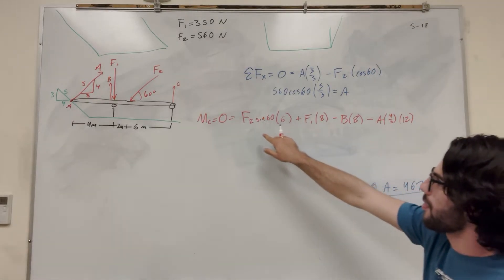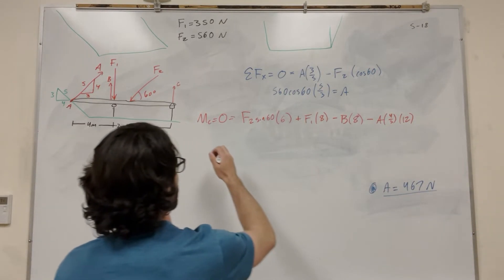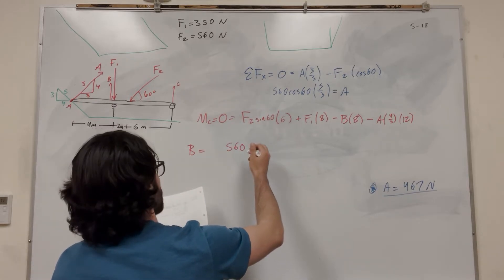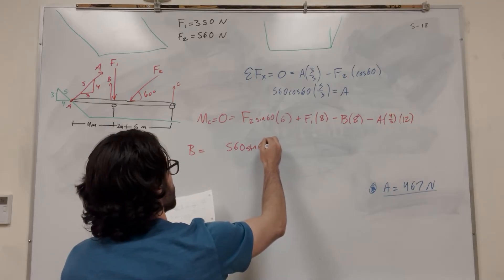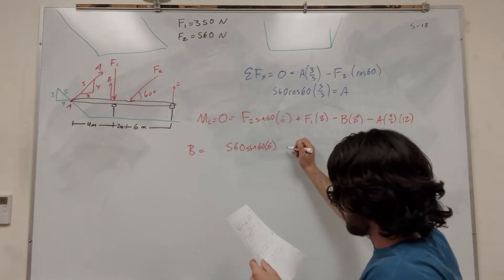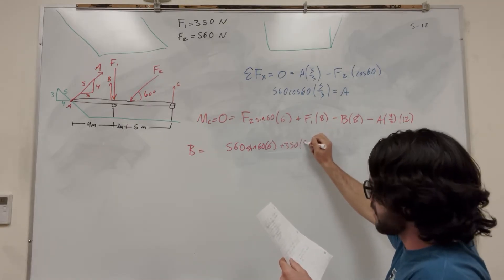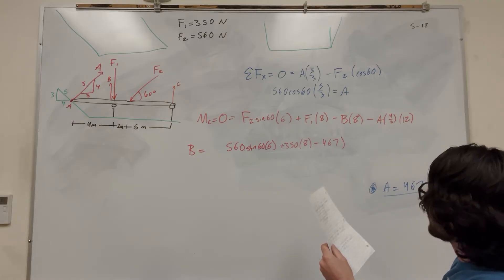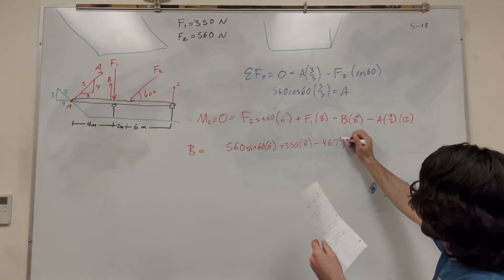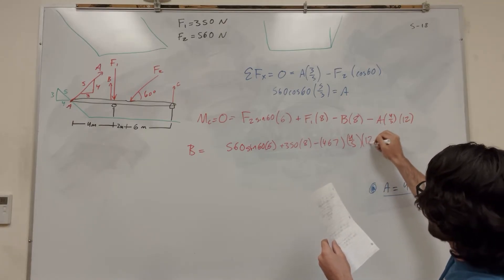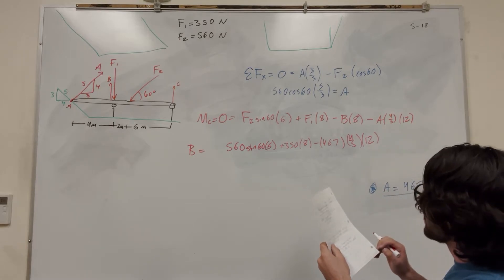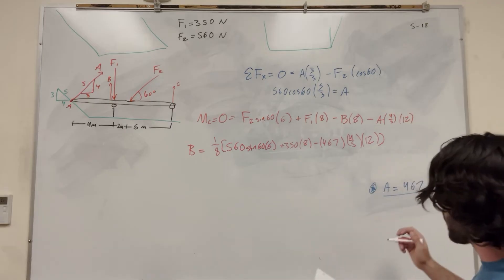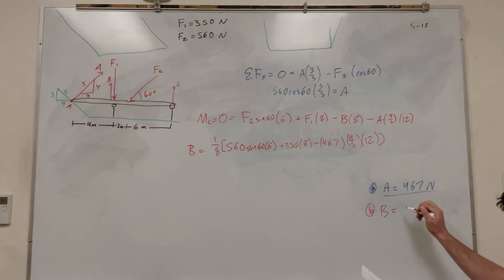So we end up with this equation. We know what A is, we know what force 1 is, we know what force 2 is. So we move everything over: B times 8 equals force 2 sine of 60 times 6, plus 350 times 8, minus A times 4 over 5 times 12. Then divide by 8 to get B. Doing that math, you get B is equal to 152 newtons.